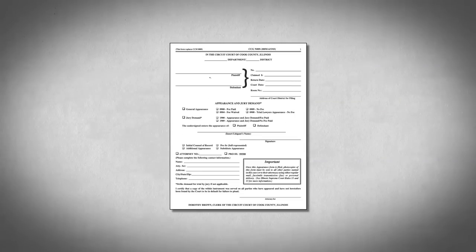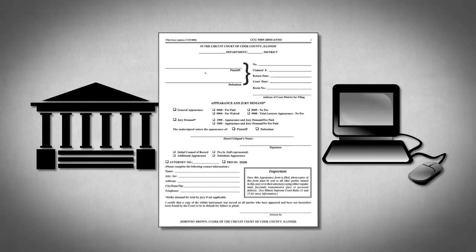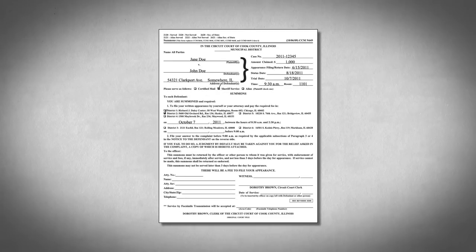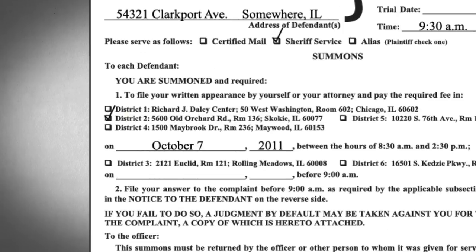Filing an appearance in a lawsuit is how you tell the court you will defend the lawsuit. You can find an appearance form at the court or online. Just fill it out and file it. The summons that you receive with your complaint will give you instructions on where and when you must file your appearance.